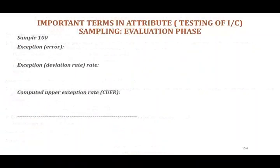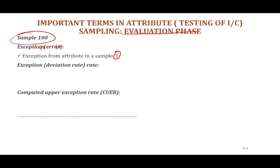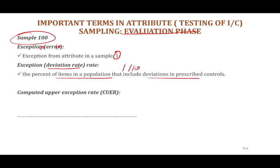Now for evaluation-phase terms. We're working with a sample of 100. If we find 1 exception out of 100 — say, one credit sale without manager approval — the sample deviation rate is 1/100 = 1%. The next step is to compute the Computed Upper Deviation Rate (CUDR), which is the upper limit of the probable population exception rate.